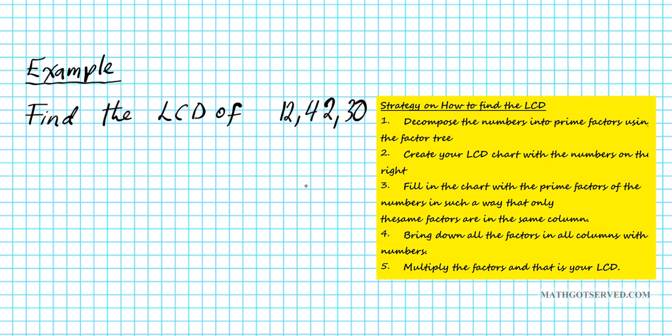Step number one, first thing we're going to do is we're going to decompose each number into the prime factors. So let's start with 12. What's the first prime number that goes into 12? Well, since it is even, we know that 2 goes into it, right? So take out 2, 12 divided by 2 is 6. This is still even, we take out another 2. 6 divided by 2 is 3. 3 is prime, so we're done. So the prime factor decomposition of 12 is 2 times 2 times 3.